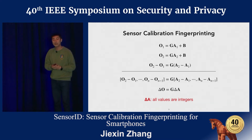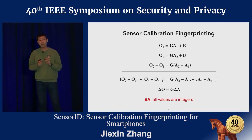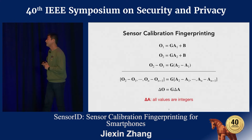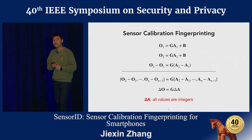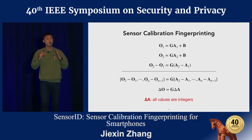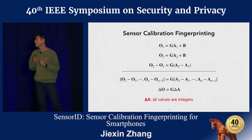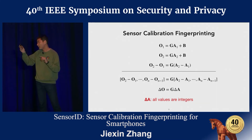But there are some nice properties we can exploit. First, the output of the ADC can only be an integer, which means the matrix delta A only has integer values. We also know that the gain matrix is close to its nominal value — the value that the sensor is designed to operate at — which is often documented in the datasheet. These properties allow us to infer the value of delta A and further estimate the value of the gain matrix G.